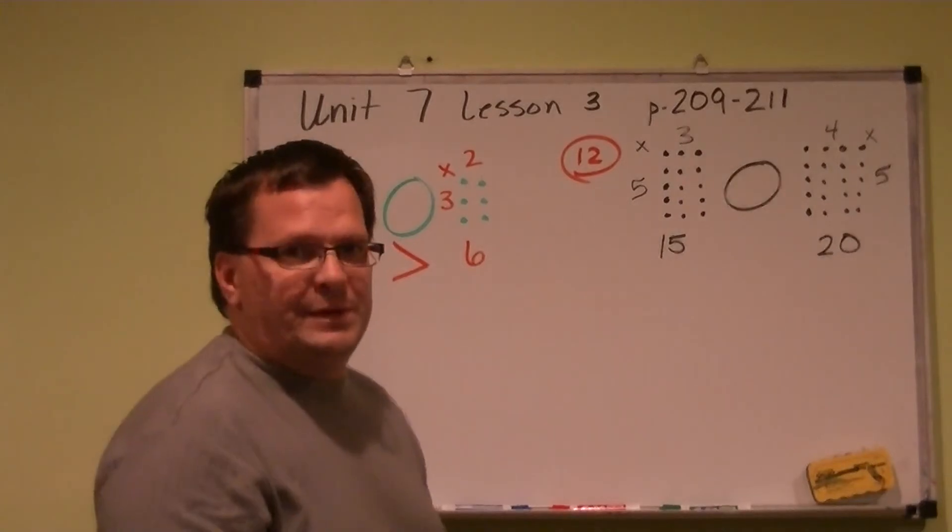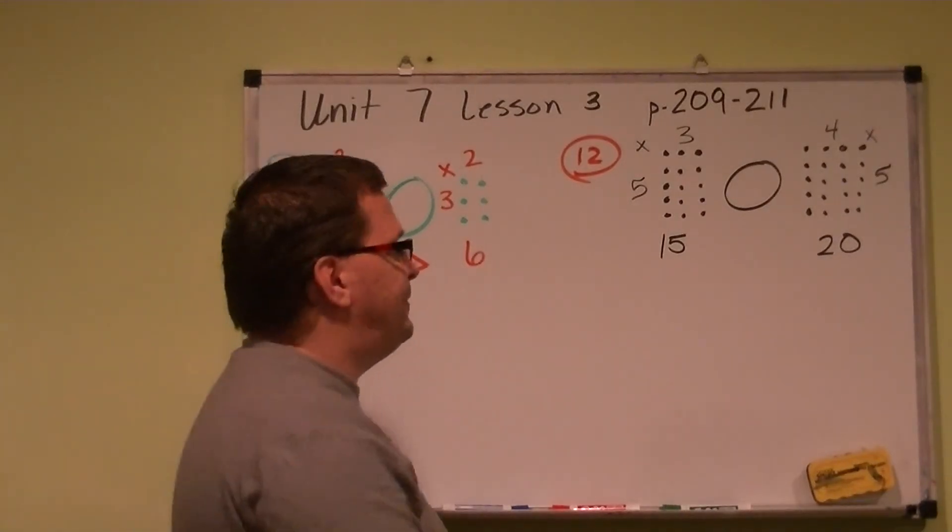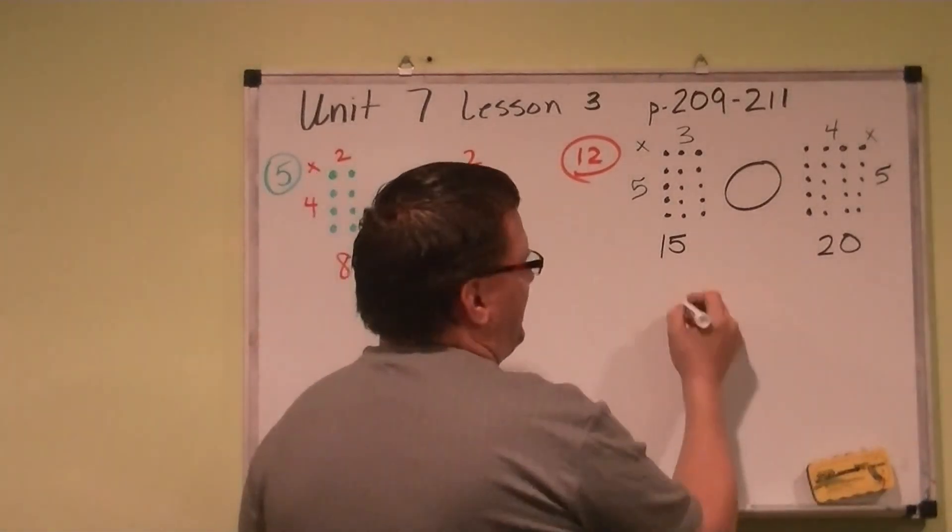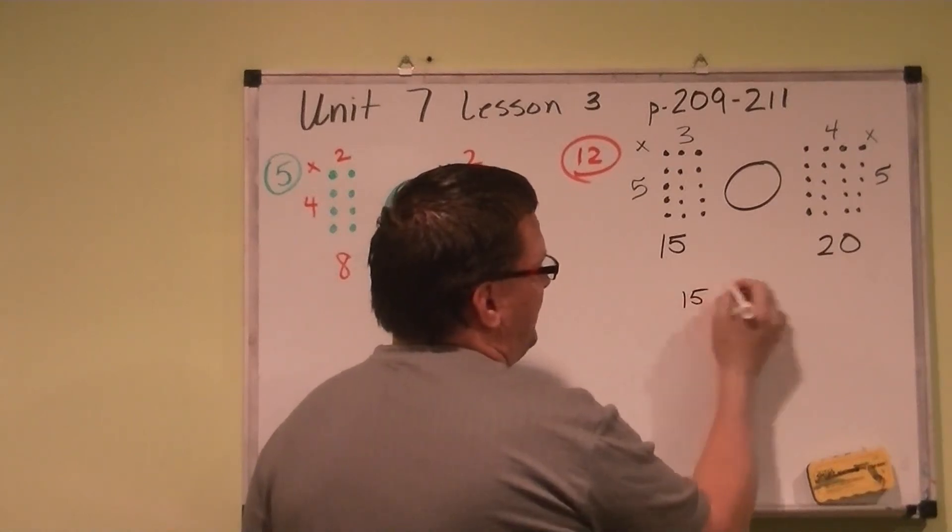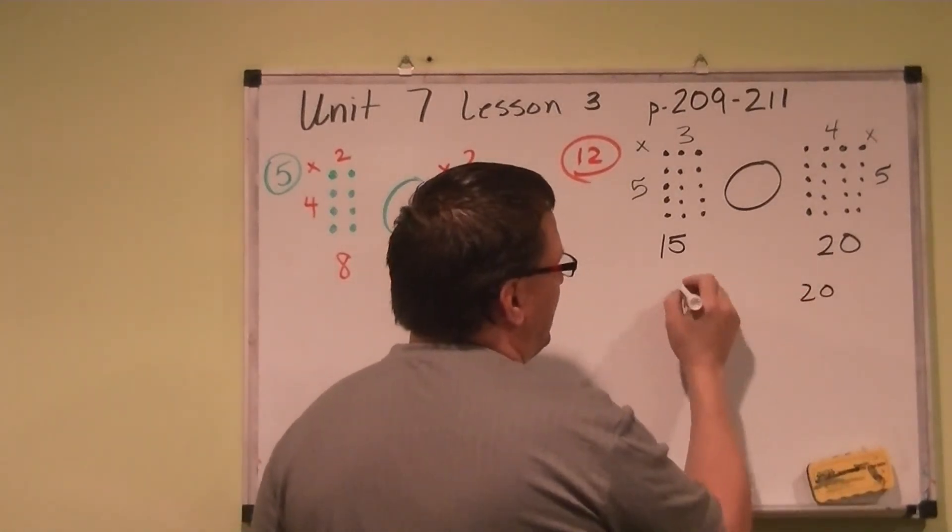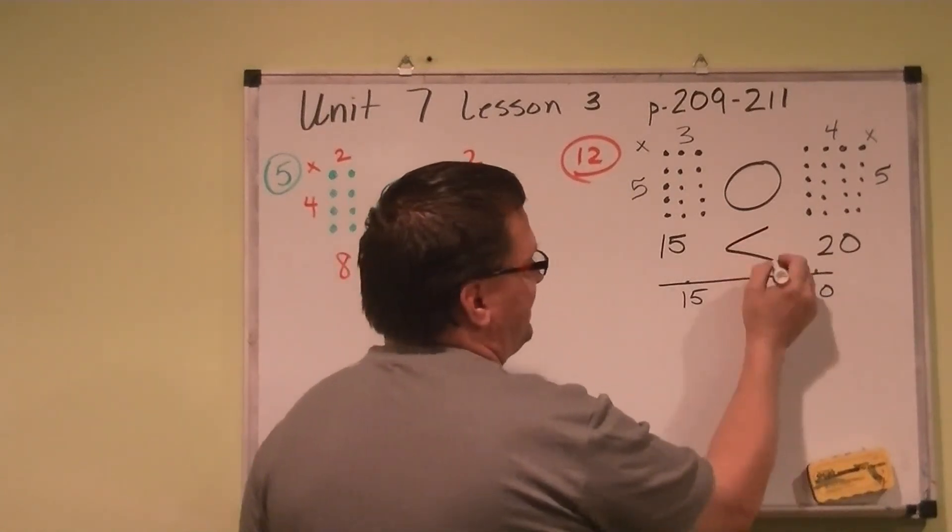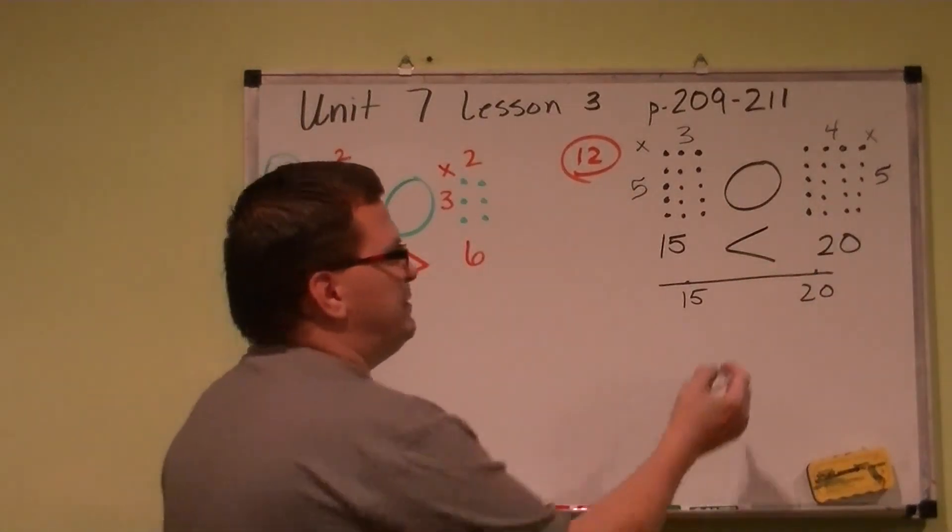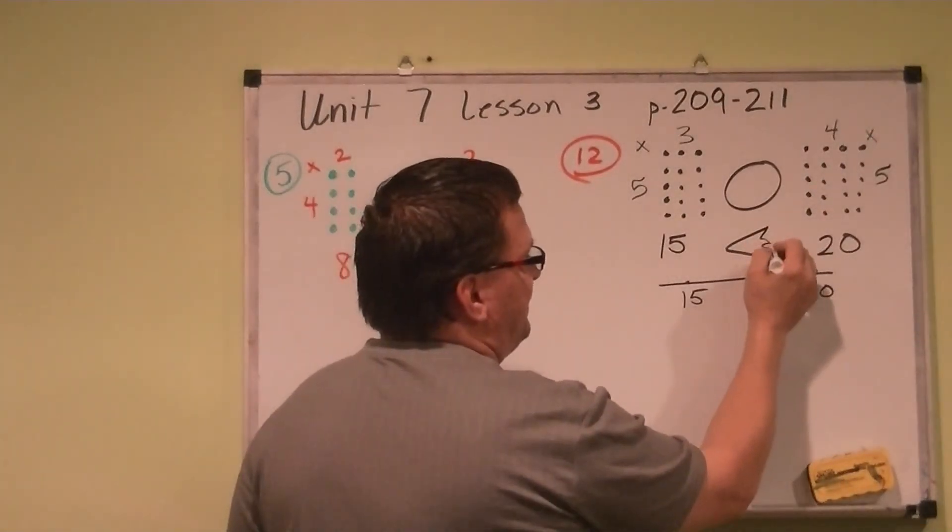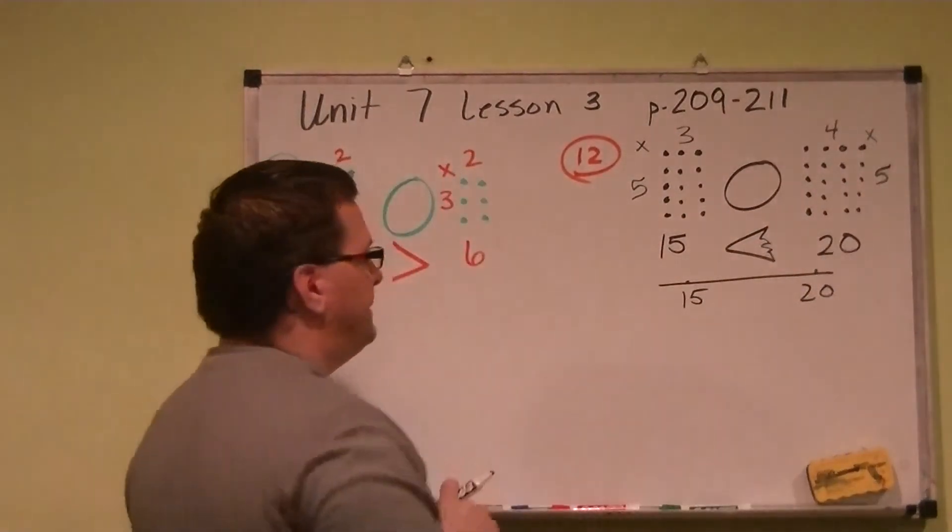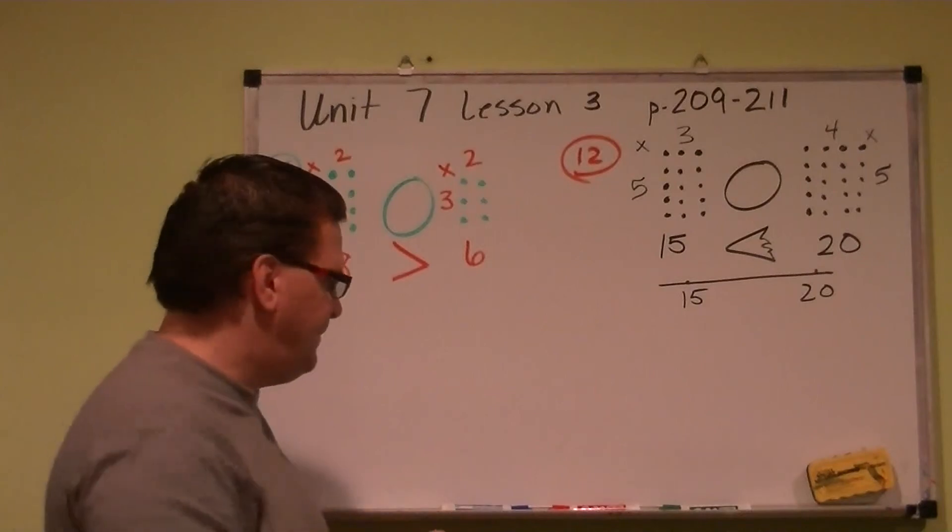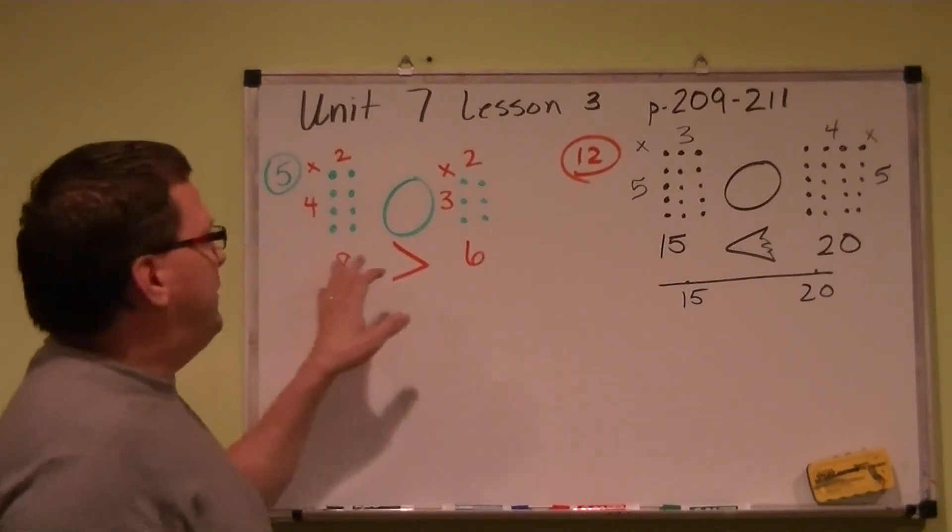So fifteen, is it greater than, equal to, or less than twenty? Well, obviously, if we did a number line, fifteen would be here, twenty would be here on a number line. And twenty is greater than. So twenty is going to get chomped down. And I always remember that, because I always put little teeth in there, like my alligator. Or a shark. However you want to do it. But that's number five and number twelve.